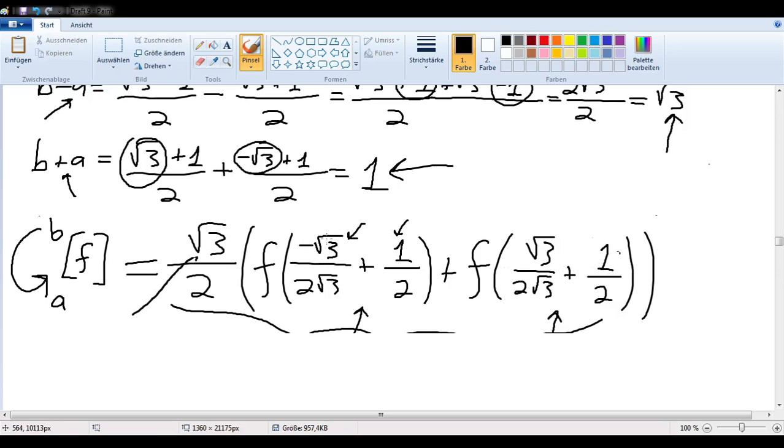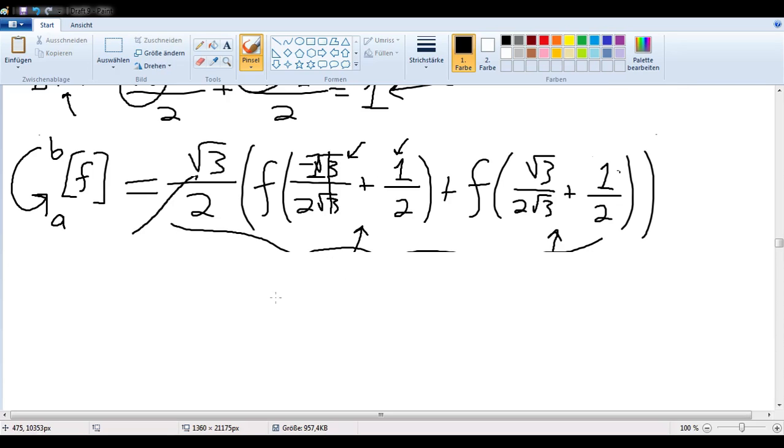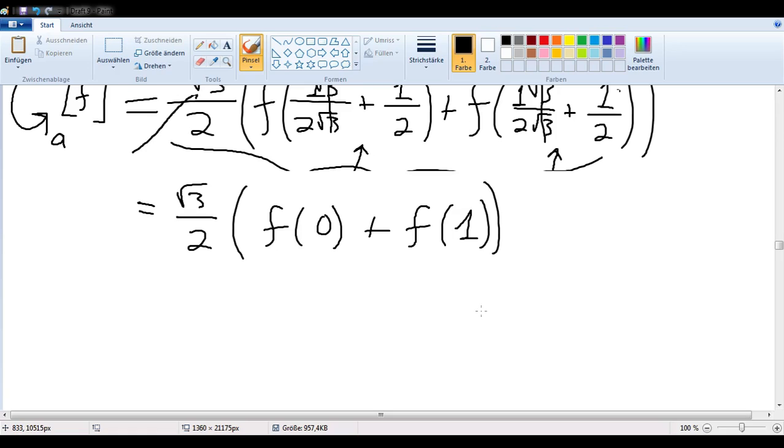And now, if I cancel here, then that means, in the end, I have a negative 1 half plus a 1 half. Well, that's nice. That just simplifies to f of 0, right? And if these cancel, then I also have a 1 half plus a 1 half. So, that's f of 1. Well, that works out very nicely. So, I have the square root of 3 over 2 times f of 0 plus f of 1. And now, I have to ask, what is f of 0 and f of 1? I need to know those two things.